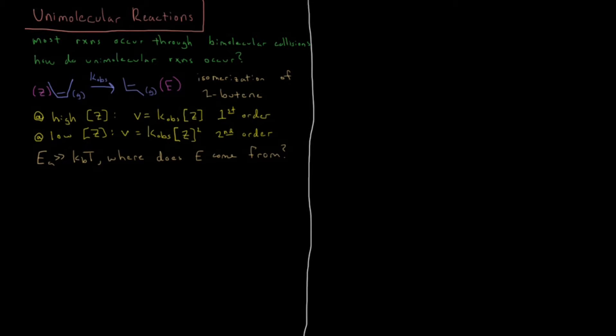In this video we're going to discuss unimolecular interactions and how first order interactions occur through bimolecular collisions. Most reactions occur through bimolecular collisions, so how is it that a first order elementary step occurs?